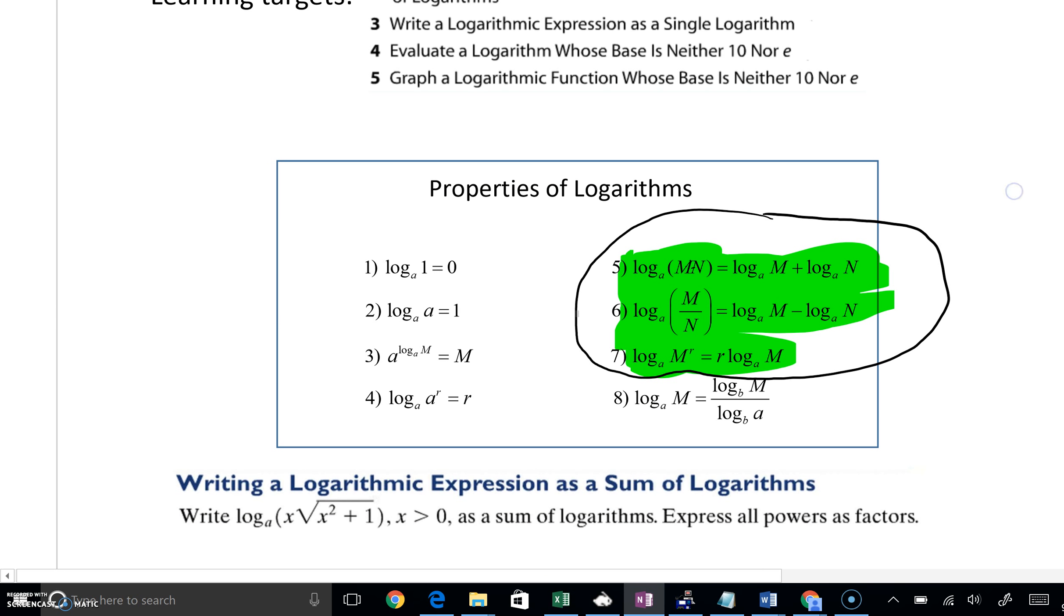And then number 7, this property that we're really focusing on today, says that if we've got log base A of M to the R power, we can take that exponent of R and drop it down in front as a coefficient. That would become R times log base A of M.